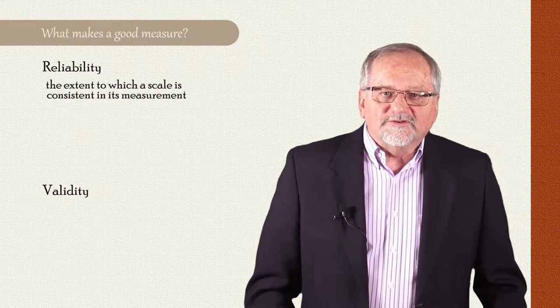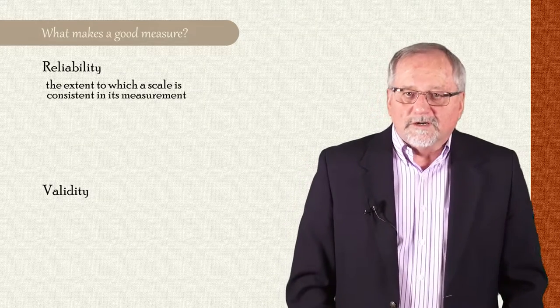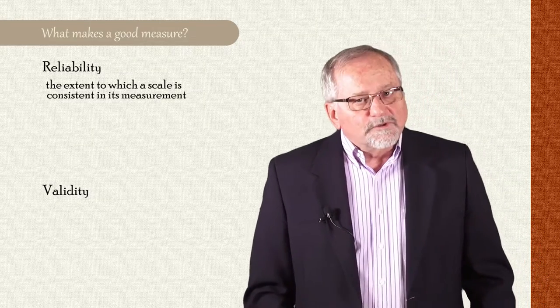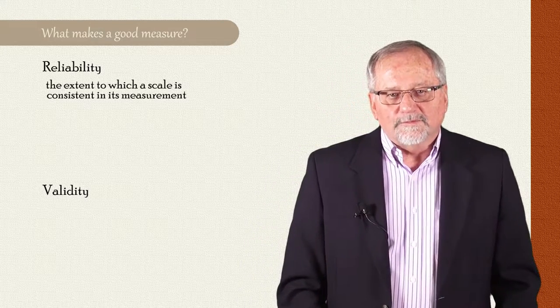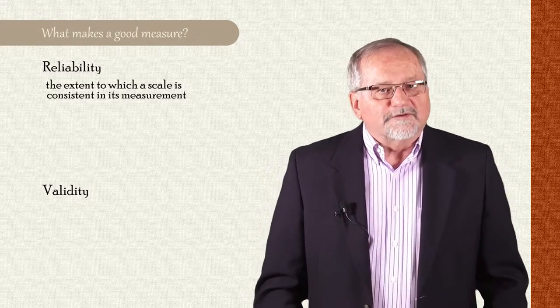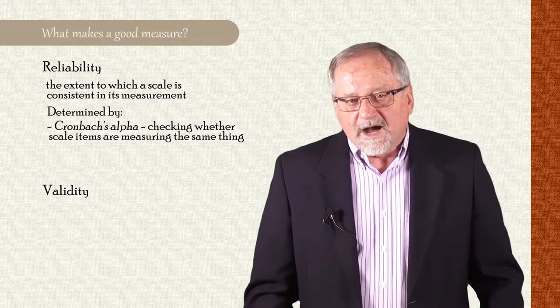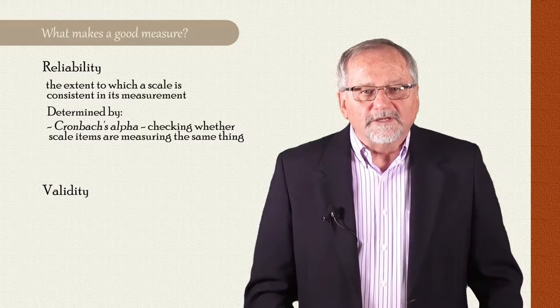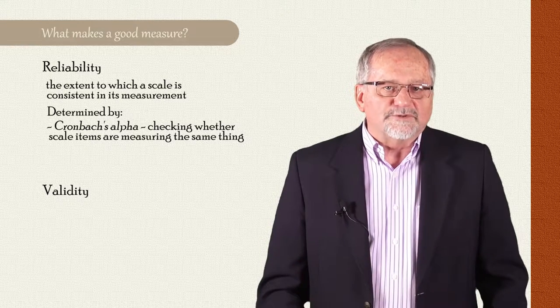Reliability is the extent to which a scale is consistent in its measurement. If you are a humble person today, then you will likely be a humble person two weeks from now, all things being equal. A measure should show such consistency. There are several ways to determine a scale's reliability. The most common is called Cronbach's alpha, and it's an indicator of the extent to which the scale's items are measuring the same thing.